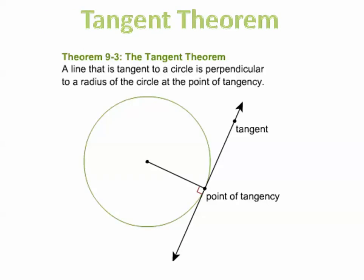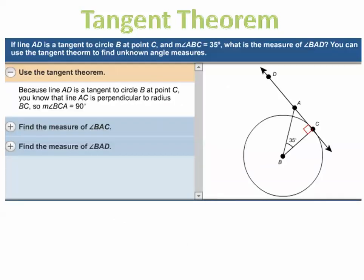The tangent theorem says a line that is tangent to a circle is perpendicular to a radius of the circle at the point of tangency. Here's an example problem: if line AD is tangent to circle B at point C, and the measure of angle ABC is 35 degrees, what's the measure of angle BAD?